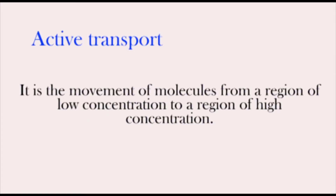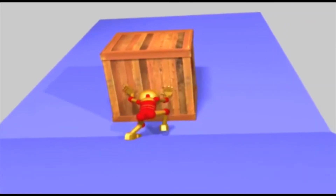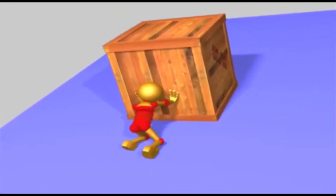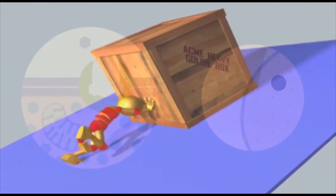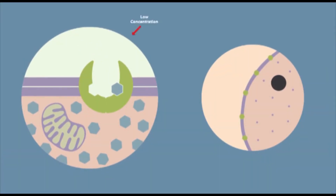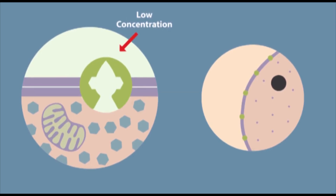Another type of transport is active transport. Active transport, also known as uphill transport, is the movement of molecules from a region of low concentration to a region of high concentration. That means the molecules move against gradients. Assume you are pushing a box uphill — since you are working against gravity, extra energy is needed. Active transport works the same way and requires energy, which is obtained from respiration.